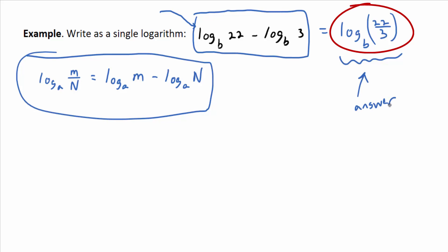Not too bad, right? What do you think the common mistake is here? So this is not, big old not equal to, it's not the same as log base B of 22 divided by log base B of 3. But that would be the common misconception for obvious reasons, I think. Okay, but it's not the same.